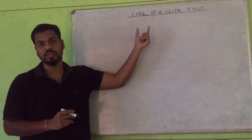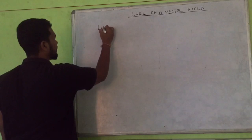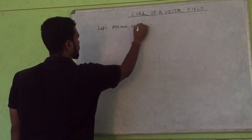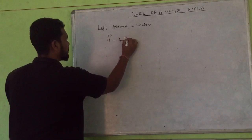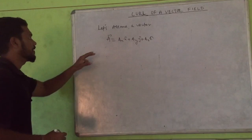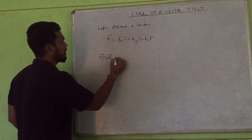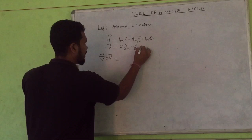Let's assume a vector field of the form A equals to Ax x-cap plus Ay y-cap plus Az z-cap. If you take the curl, that is grad cross A, you know grad is x-cap del upon del x, plus y-cap del upon del y, plus z-cap del upon del z.